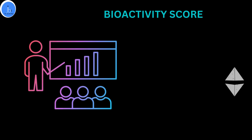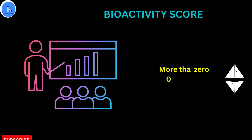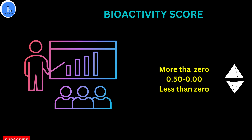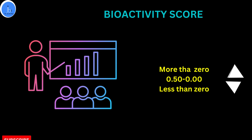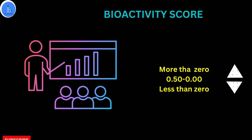Let's see how you can interpret the bioactivity score. If the score is more than zero, the molecule will likely exhibit considerable biological activity. If the values are between -0.50 and 0, it is expected to be moderately active. A score lesser than -0.50 is presumed to be inactive.